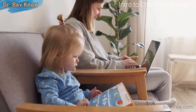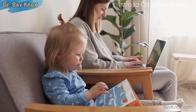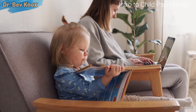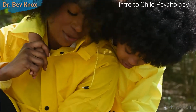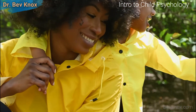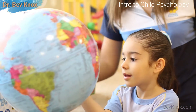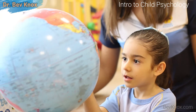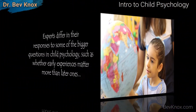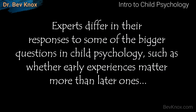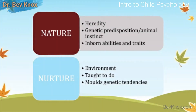Historically, children were often viewed simply as smaller versions of adults. But today, psychologists recognize that child psychology is unique and complex, though many differ in terms of the unique perspective they take when approaching development. Experts differ in their responses to some of the bigger questions in child psychology, such as whether early experiences matter more than later ones, or whether nature or nurture plays a greater role in development.